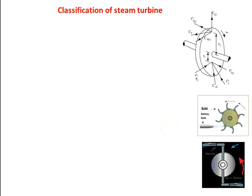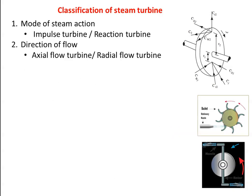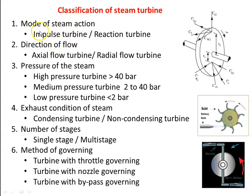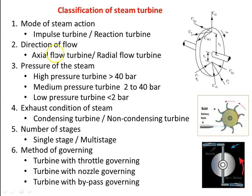How do we classify the steam turbine? The first classification is by mode of steam action: impulse turbine or reaction turbine. Looking at the diagram, an impulse turbine resembles the Pelton turbine, which is a hydraulic turbine of impulse type. Steam flows through the nozzle, and the jet of steam leaving the nozzle impinges on the rotor, making it rotate. This is the impulse principle, and this type is called an impulse turbine.